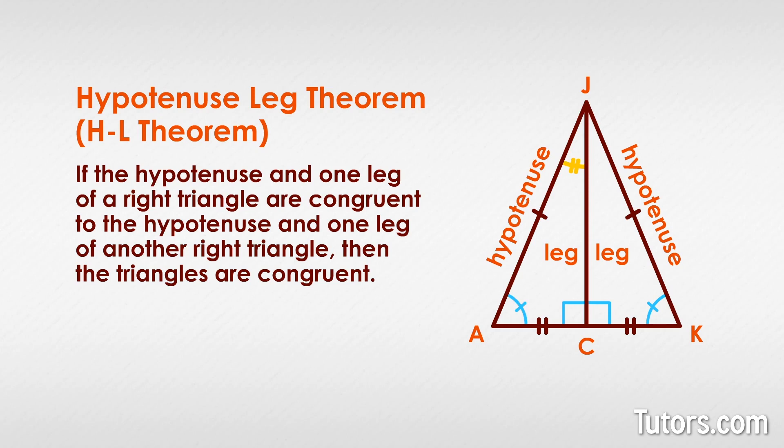Angle AJC is congruent to angle CJK because side JC was the angle bisector of original angle AJK. So, all three interior angles of each right triangle are congruent and all sides are congruent. CPCTC. We originally used the isosceles triangle to find the hypotenuse and a single leg congruent, and from that we built proof that both triangles are congruent. You have now proven the HL theorem and can use it confidently now.